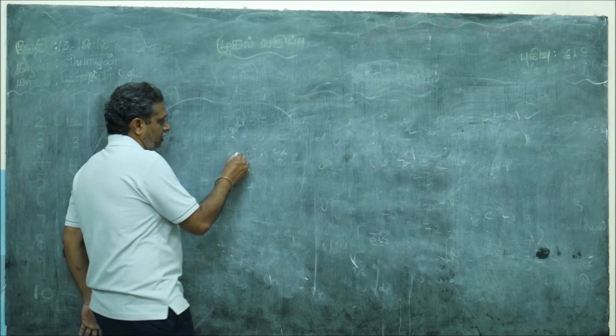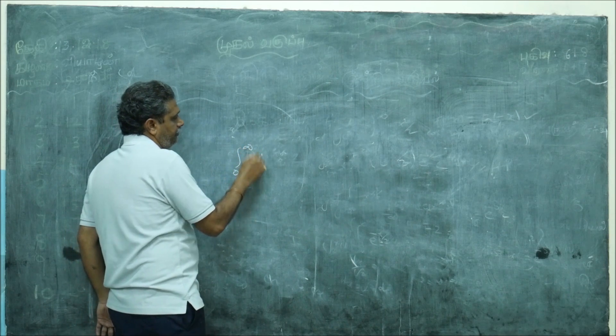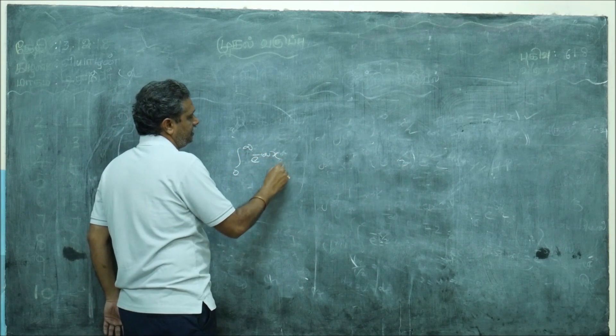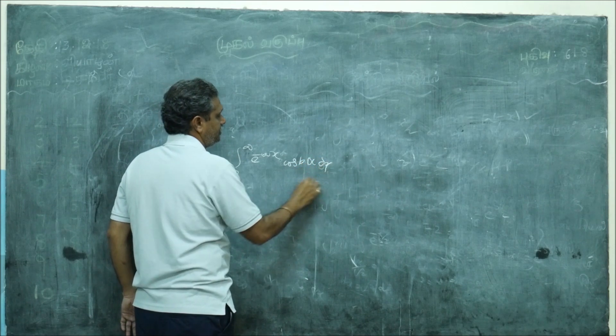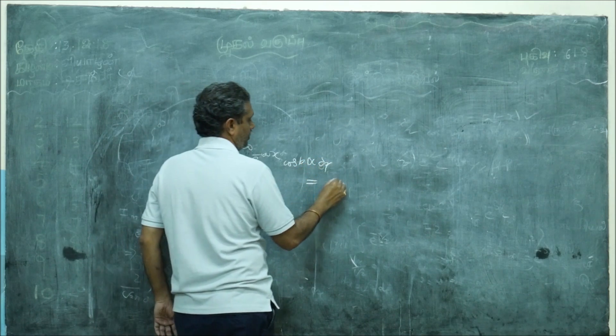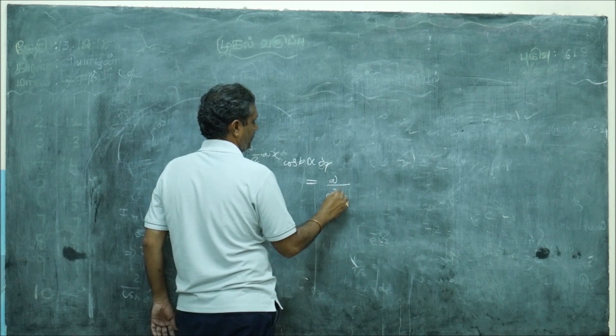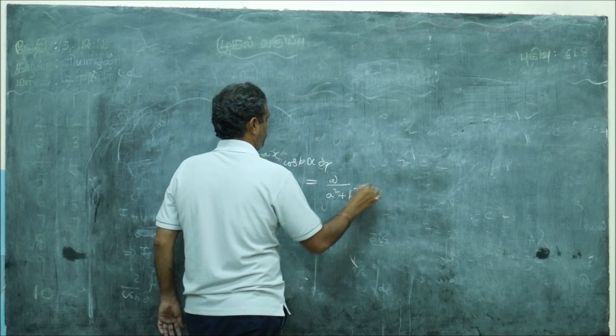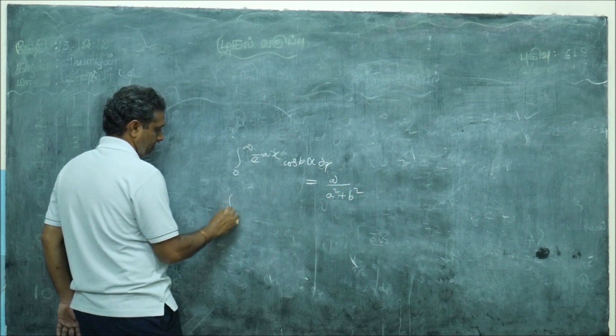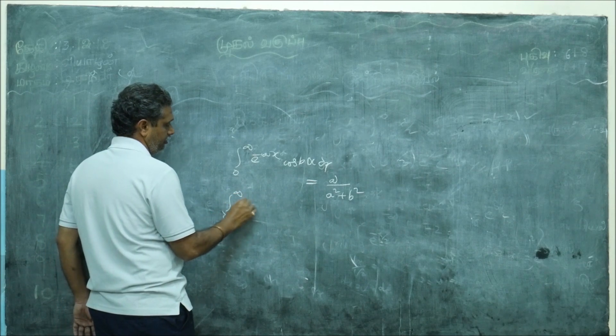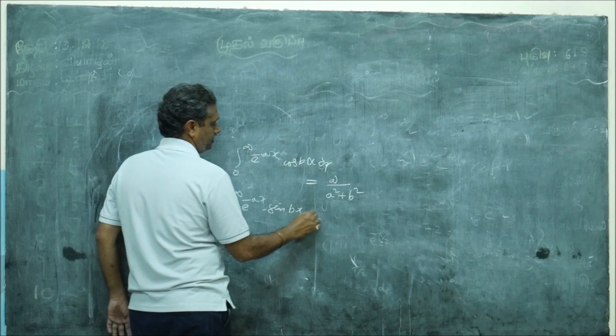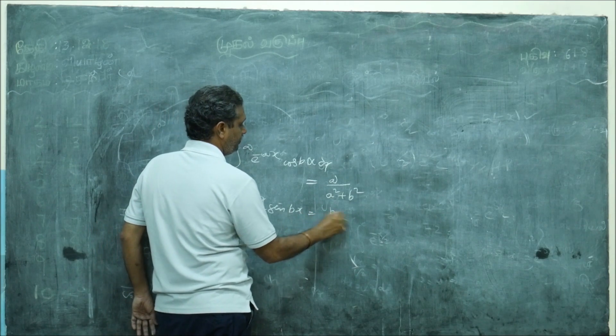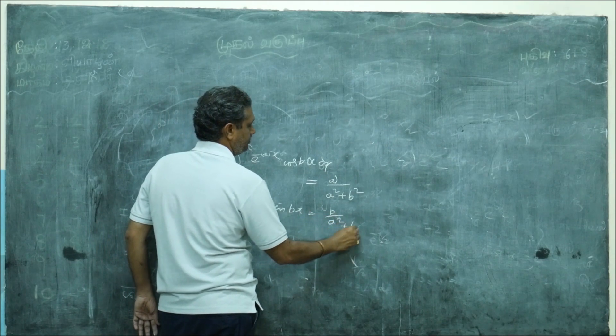But one thing you can remember: 0 to infinity e power minus a x cos b x dx is equal to a by a square plus b square. Then 0 to infinity e power minus a x sin b x is b by a square plus b square.